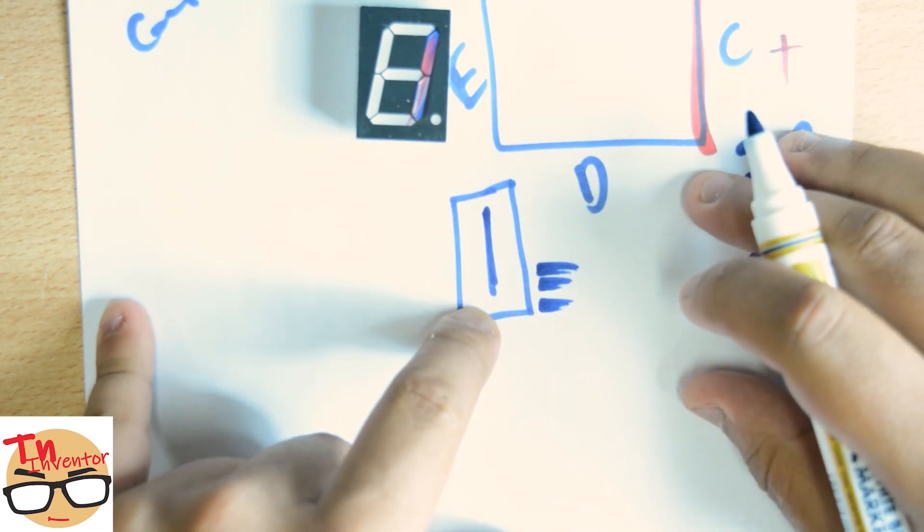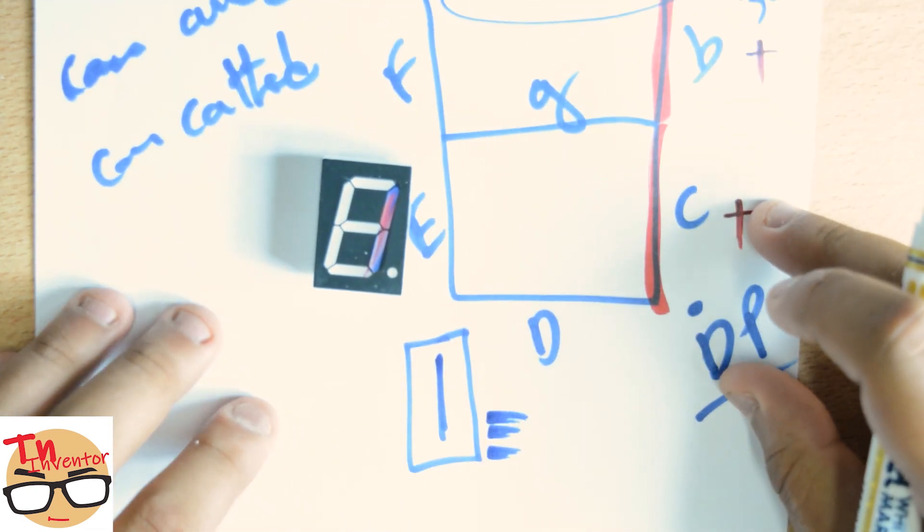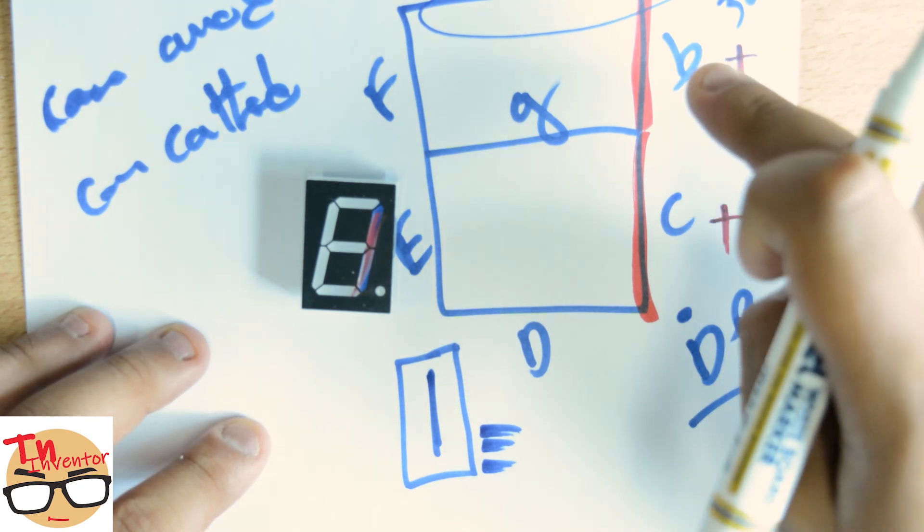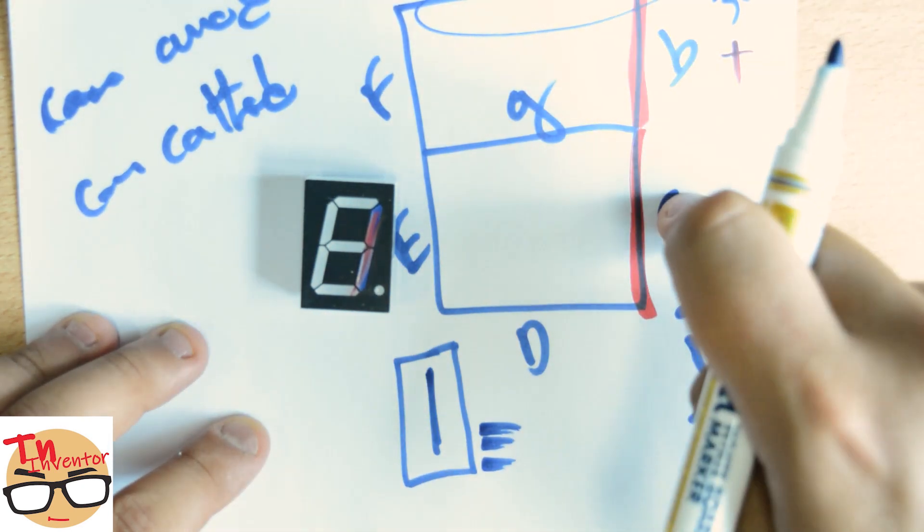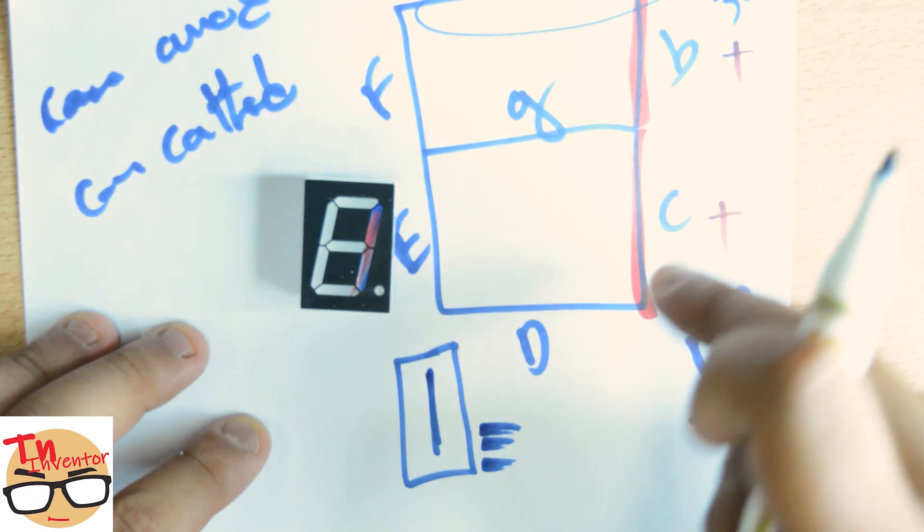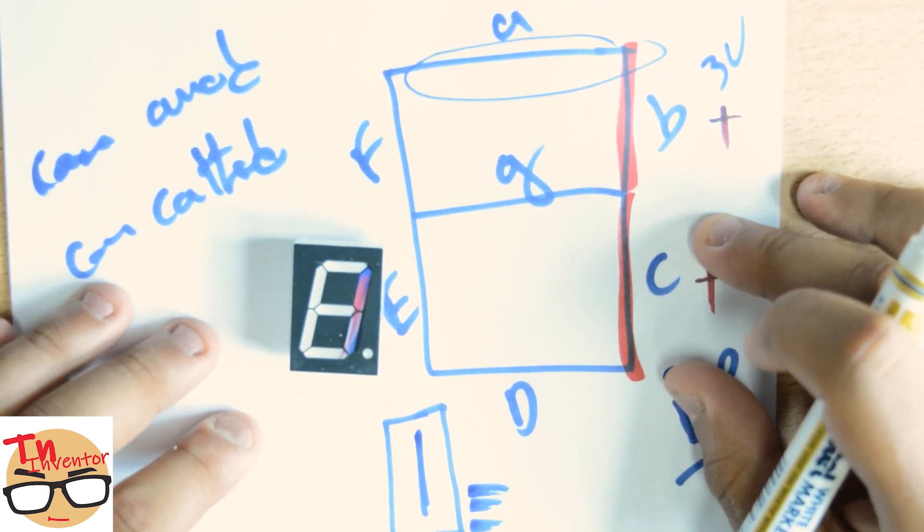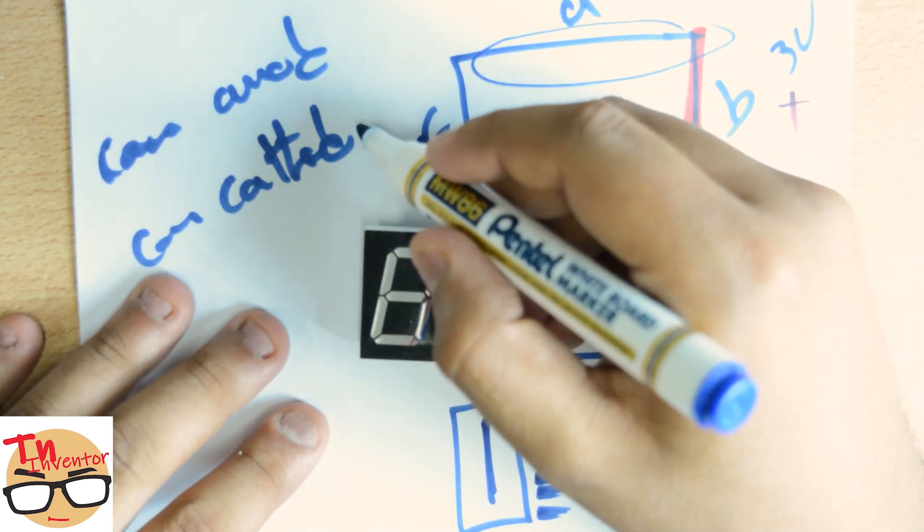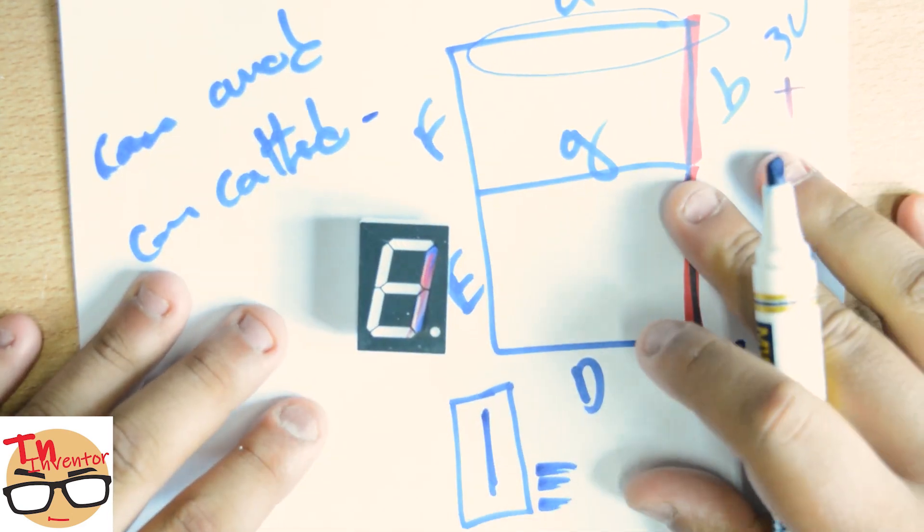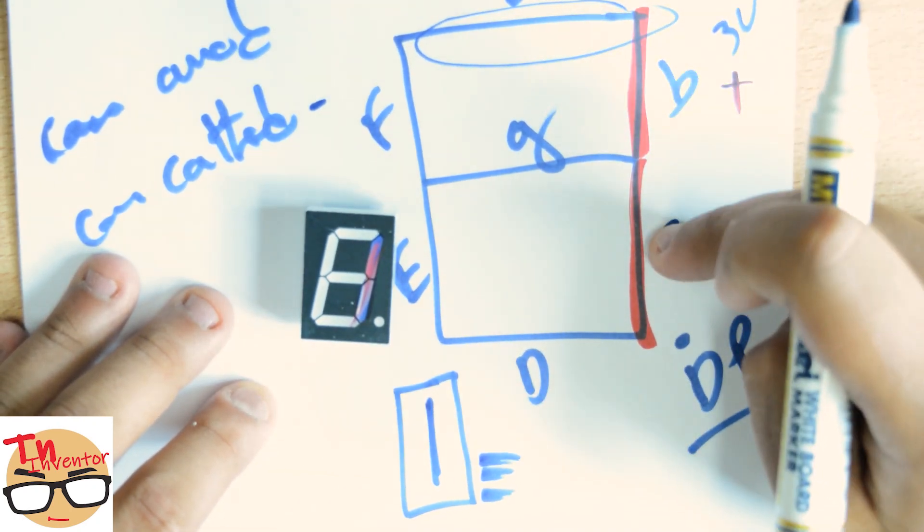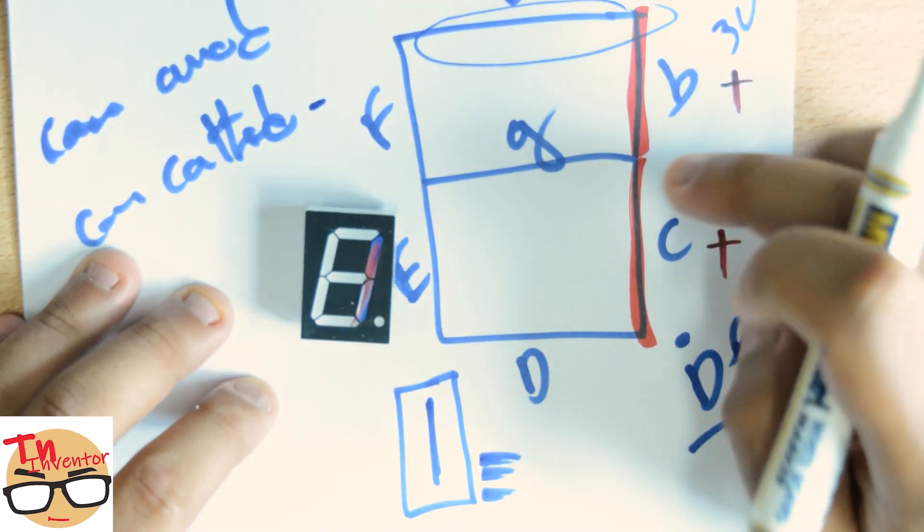If you put this to ground, the connection is like this: we apply voltage between the LED in B and the LED in C. To close the circuit, this is ground, so we light up number one. With common cathode, you put it to minus and it works with plus. To light a segment, you need to put high voltage on it.